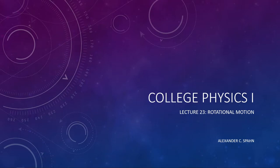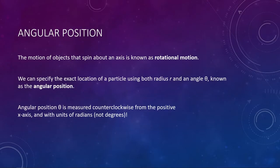Hello and welcome to College Physics 1, Lecture 23, Rotational Motion. In previous lectures we were looking at circular motion, which is very similar in a way, but here we're talking about objects that are rotating about a central axis. Any time we have a situation like this, we consider it to be rotational motion.